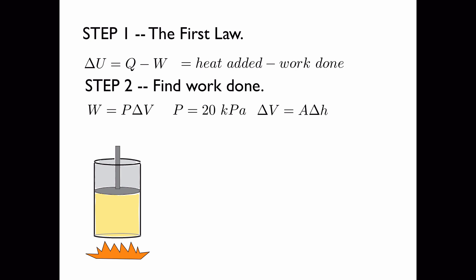For a cylinder, this is the area times the change in height. The area was stated to be 0.4 m², and the change in height is 10 cm, or 0.1 m. So 0.04 m³ is the change in volume.